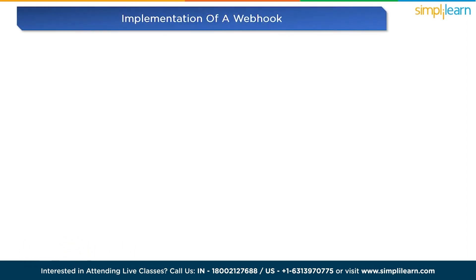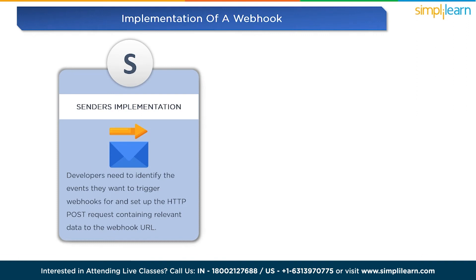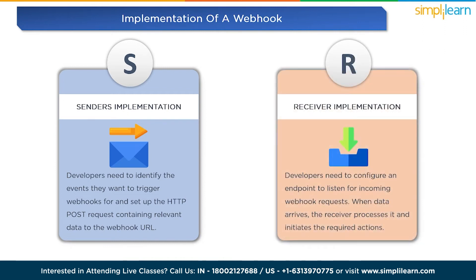Implementing webhooks involves two primary roles: the sender and the receiver. In the sender application, developers need to identify the events they want to trigger webhooks for and set up the HTTP POST request containing relevant data to the webhook URL. On the receiver side, developers need to configure an endpoint to listen for incoming webhook requests. When data arrives, the receiver application processes it and initiates the required actions.